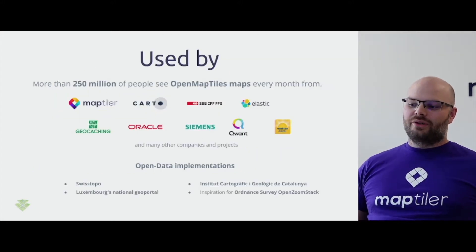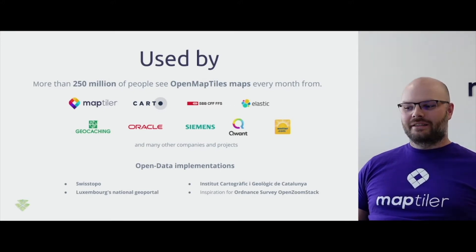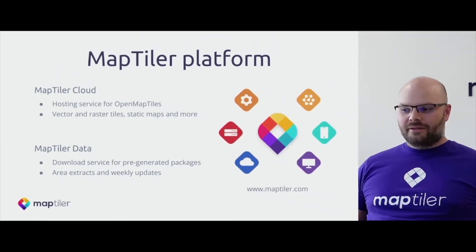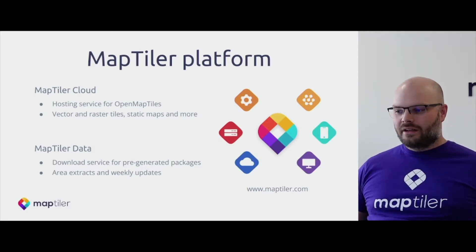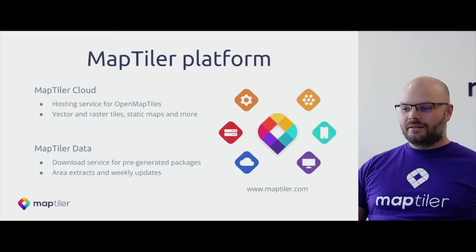Every month more than 250 million people see the vector tiles generated by the OpenMapTiles project. That is a huge number, and a large number of different companies and projects use OpenMapTiles for generating vector tiles and displaying them. At MapTiler we offer vector and raster map services for OpenMapTiles — we have a cloud solution for direct use and downloading with pre-generated packages with weekly updates, all available at maptiler.com.